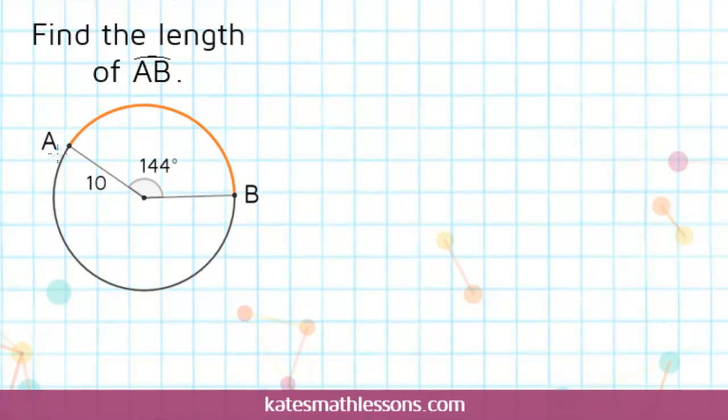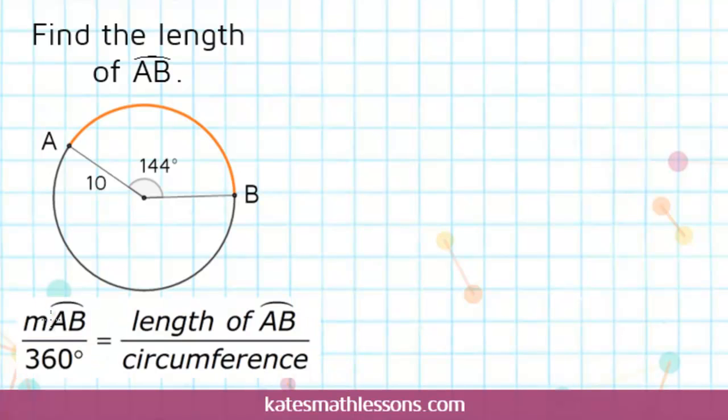We know how to find the circumference of a circle. We have the formula 2πr, and that will find the entire distance all the way around the circle. So if we're trying to find just part of the circle, there's a couple different ways to do it. One way to do it is to use a proportion.